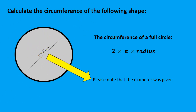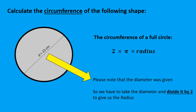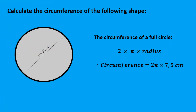Very important — please note that the diameter was given, and in our formula we use the radius. So we need to change that diameter to get the radius. Remember, the diameter is 2 times the radius. So to get the radius, you say diameter divided by 2. That gives you the radius: 15 divided by 2 gives you 7.5 centimeters.